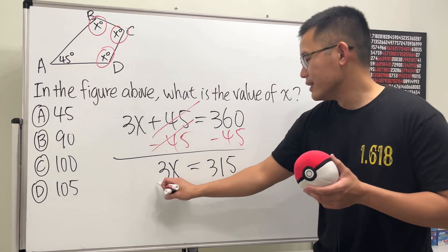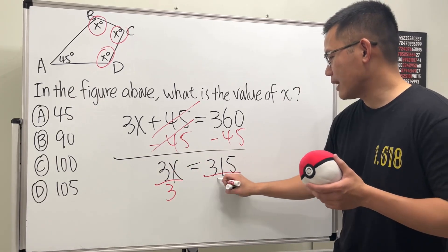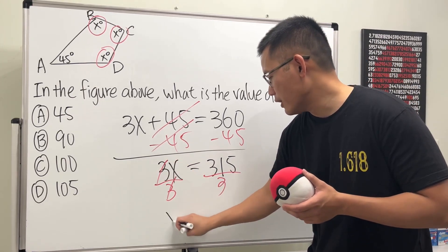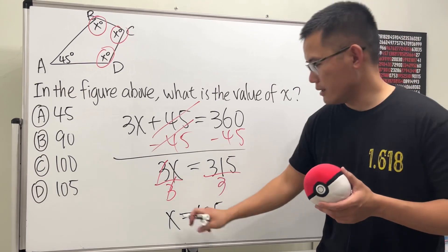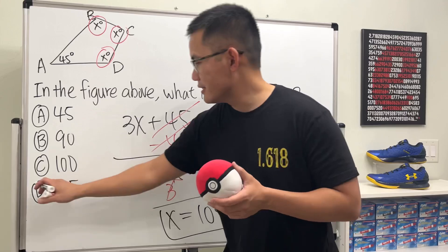Yes, and then just divide both sides by 3, because this is 3 times x. So divide both sides by 3, so x is equal to 105. So just divide, and then that's the answer. So the answer is D.